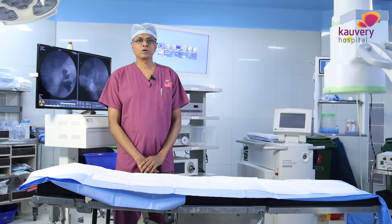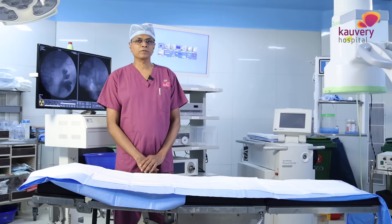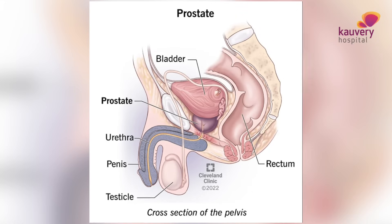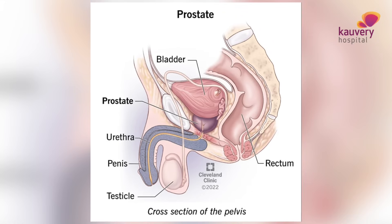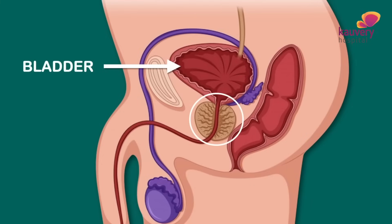I will tell you about the prostate. There is a gland called the prostate, and above it there is the urinary bladder.